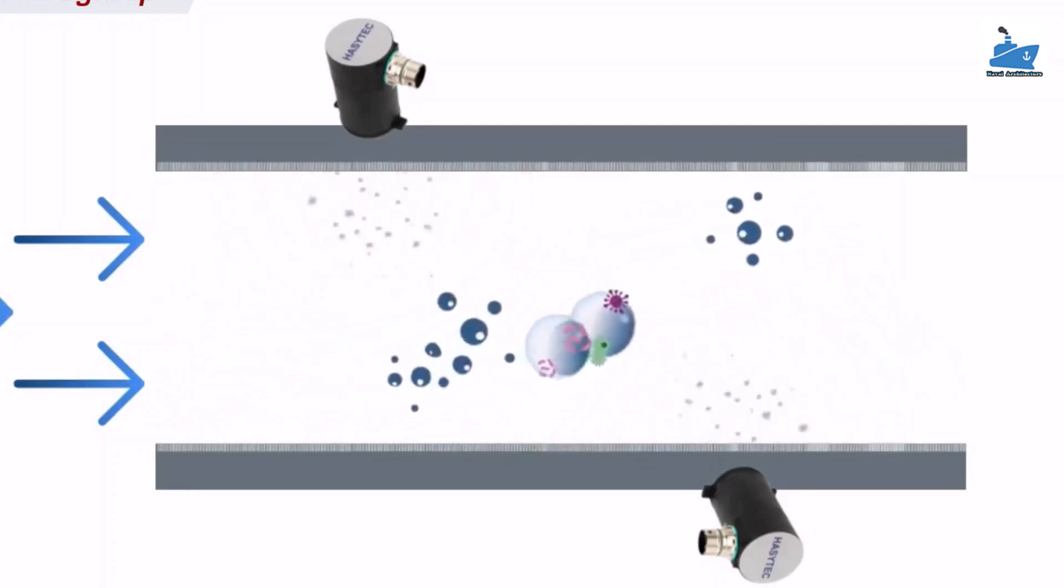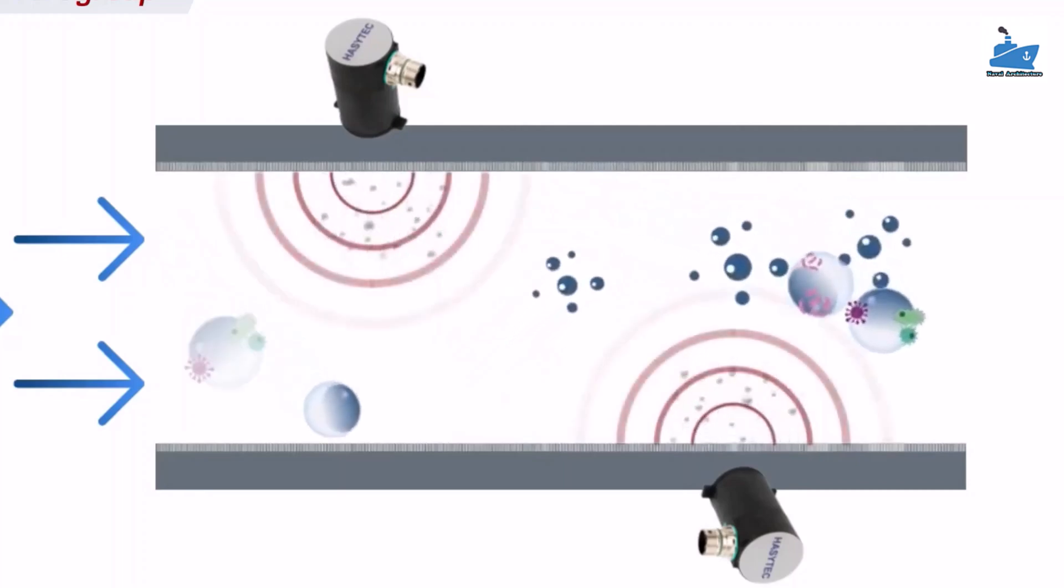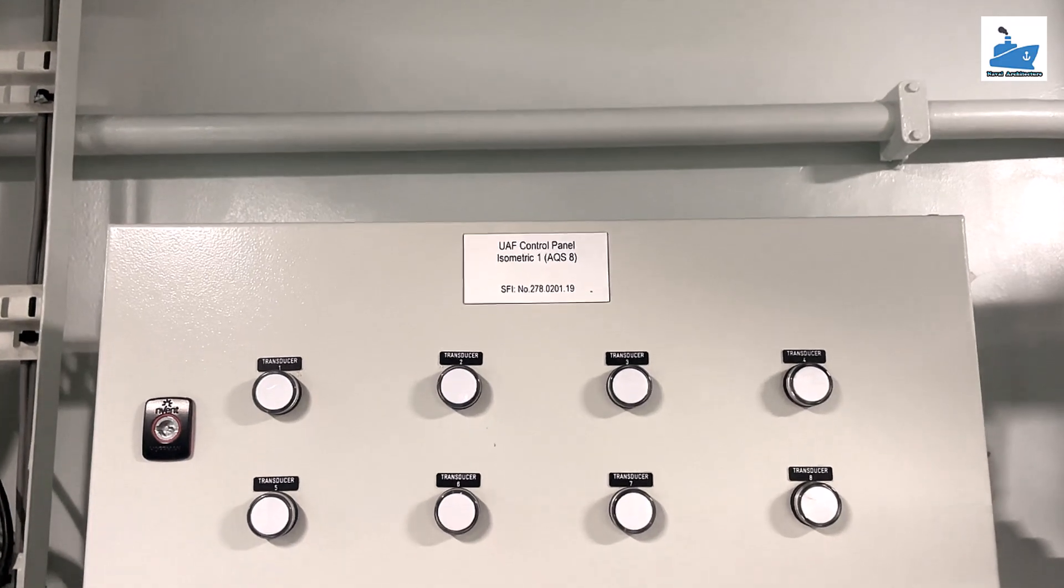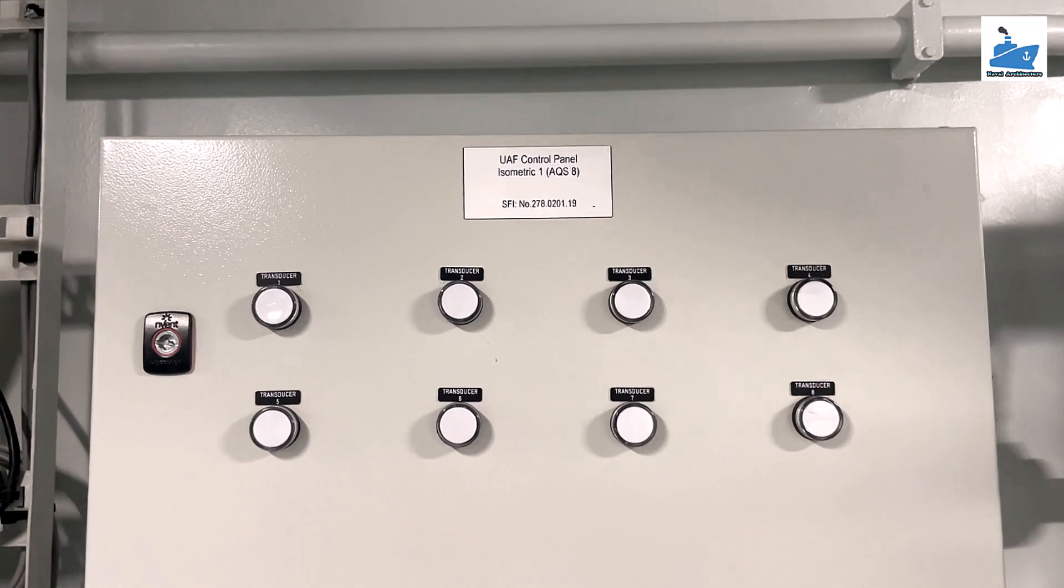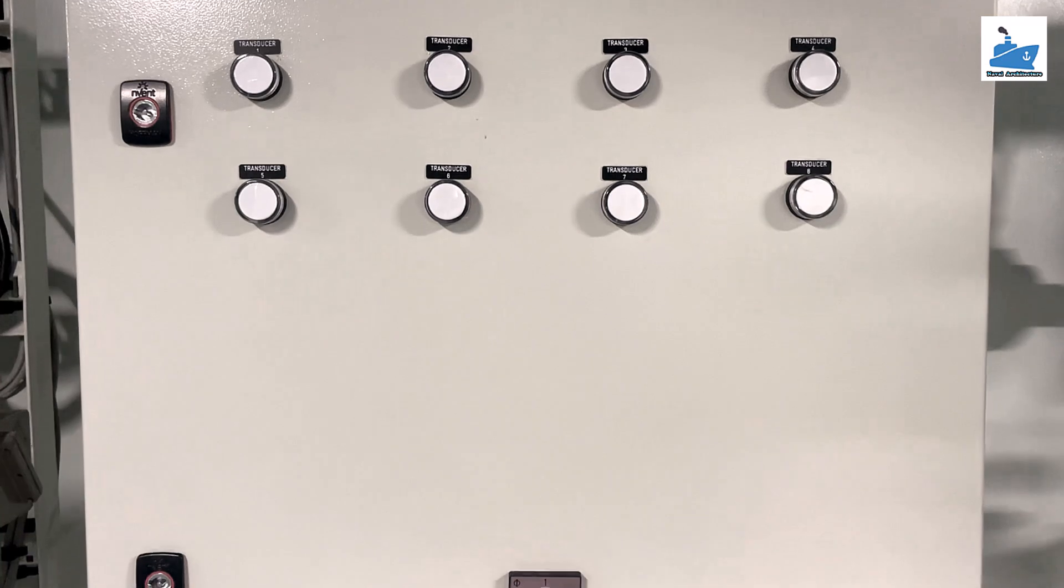This microscopic agitation has a cleansing effect that destroys surface algae, the first link in the marine food chain. Disrupting the food chain keeps the surface clean and makes it a much less inviting habitat for larger organisms that feed on the algae.